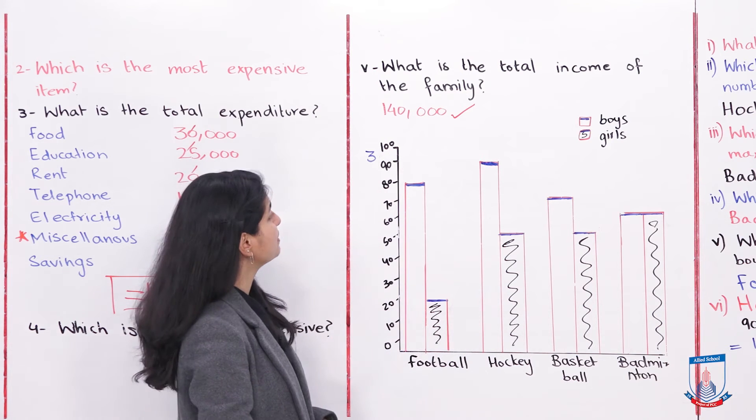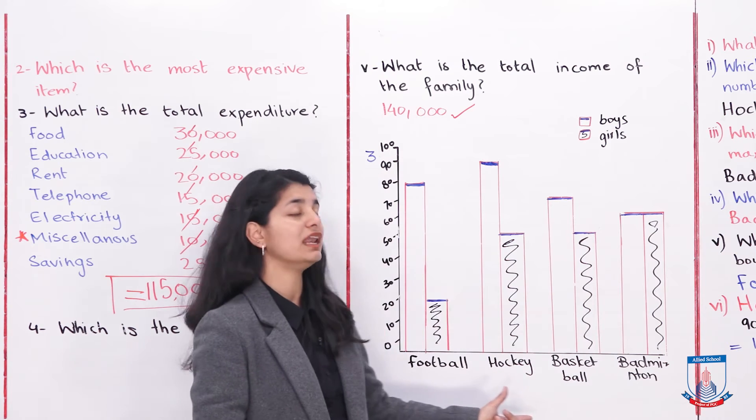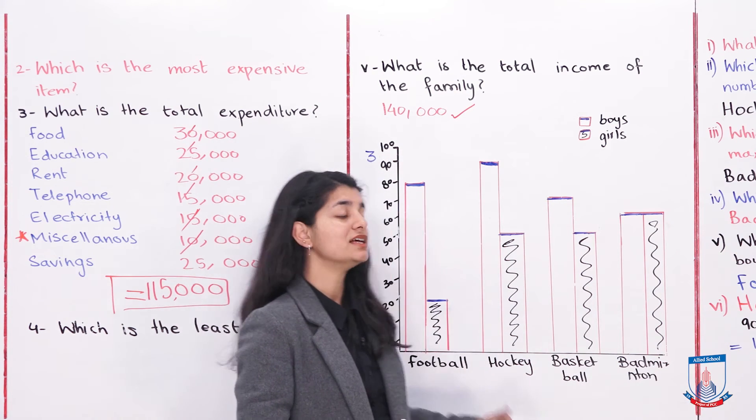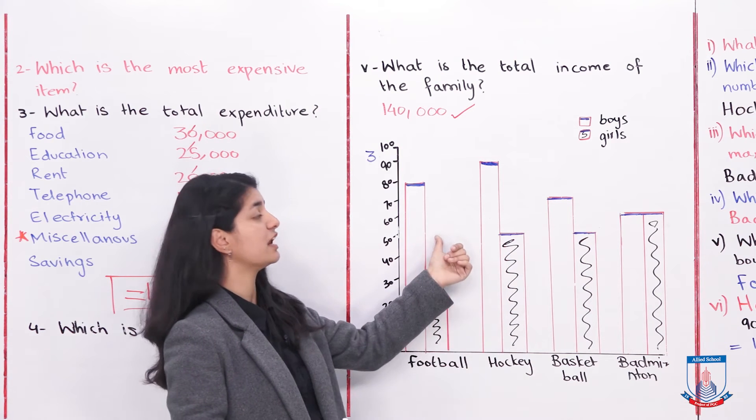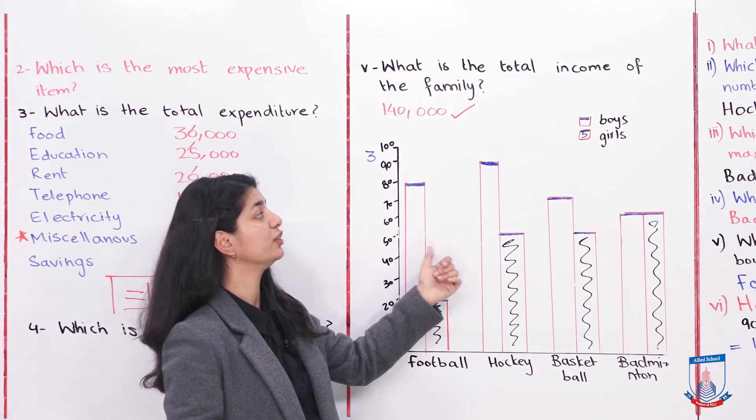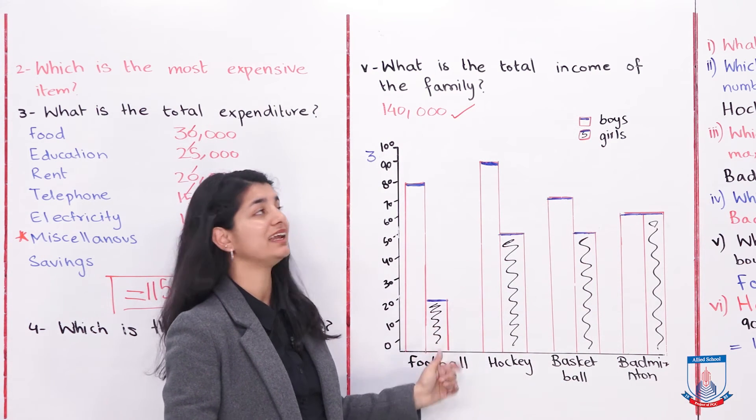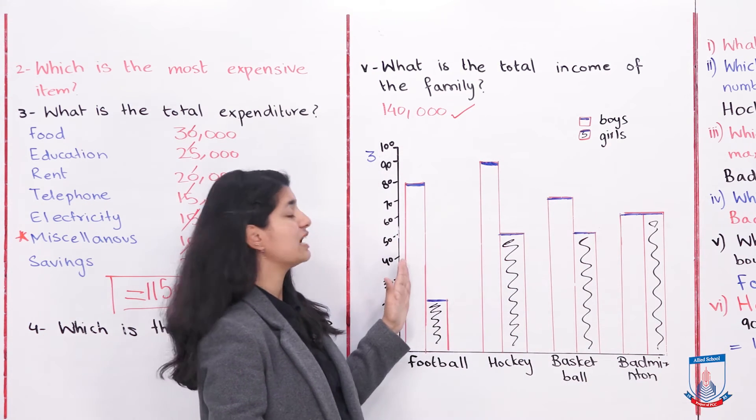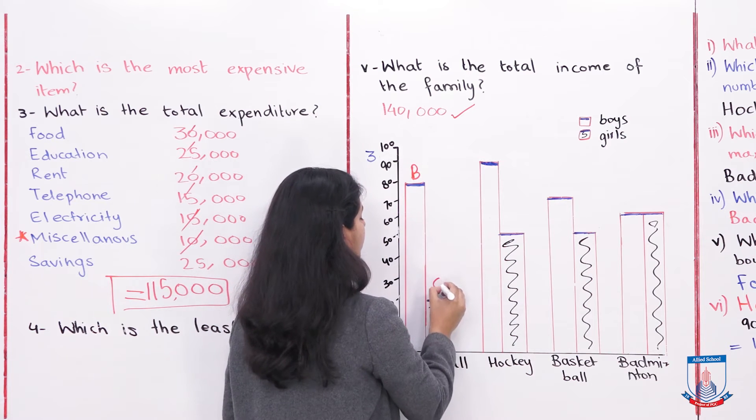Question number 3. Again, they have a very big graph. They have written different sports names, different types of sports, and the number of students. On the left side, they have written the number of students, which are the number of boys. And on the right side, girls. So boys and girls.